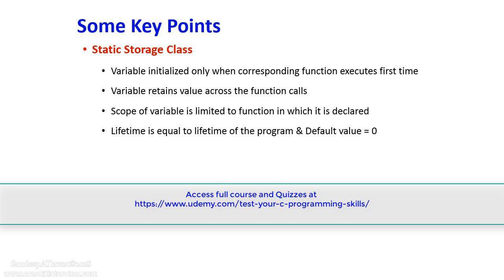Static storage class: A static variable is initialized only when the corresponding function executes for the first time. This is different from initialization of a local variable, which happens every time the particular function is called. A static variable retains its value across function calls, and the scope of a static variable is limited to the function in which it is declared, whereas its lifetime is equal to the lifetime of the program. The default value for a static variable is zero.